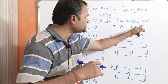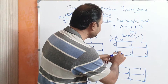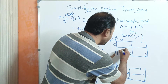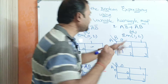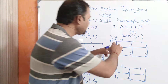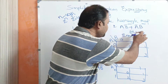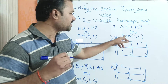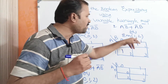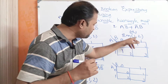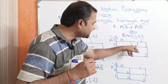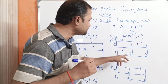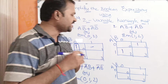Now let us solve the second problem: ab̄ + āb, or sigma m of 1 comma 2. For ab̄, a equals 1 and b̄ means b equals 0, so we write 1 in that cell. For āb, ā means this row and b equals 1 means this cell, so we write 1 there. For sigma m of 1 comma 2, minterm 1 and minterm 2 each get a 1.